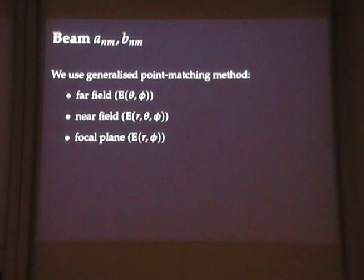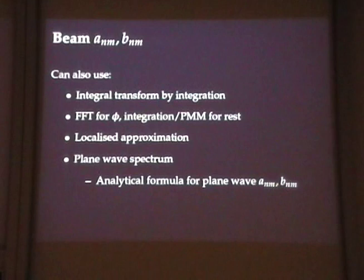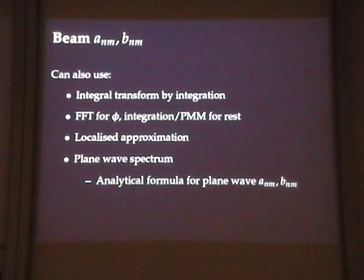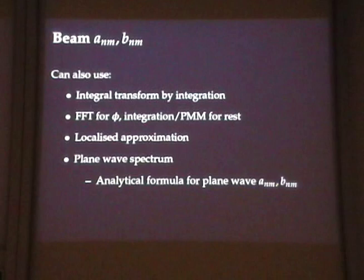We're essentially doing an integral transform by solving a linear system — it fits naturally since we're already doing point matching. The more common alternative is to actually integrate. For symmetric beams — Gaussian or Laguerre-Gauss — you can do the azimuthal part analytically, use the localised approximation, find a plane wave spectrum, and apply the analytical formula for the spherical wave spectrum of each plane wave. There are many choices at this point.